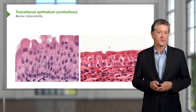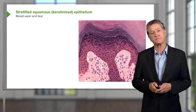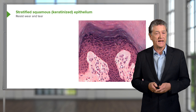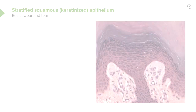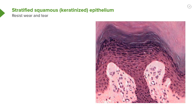Here's an example of stratified squamous keratinized epithelium — skin. In the very top part of the image you can see some purple stained material; that's keratin. It's very thick skin, such as we have on the palms of our hands and the soles of our feet — wear and tear. Skin will be covered in a later lecture.